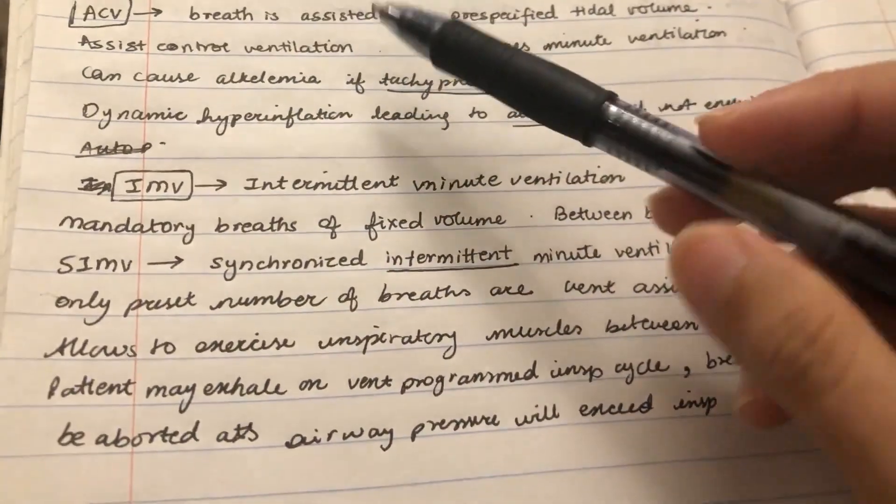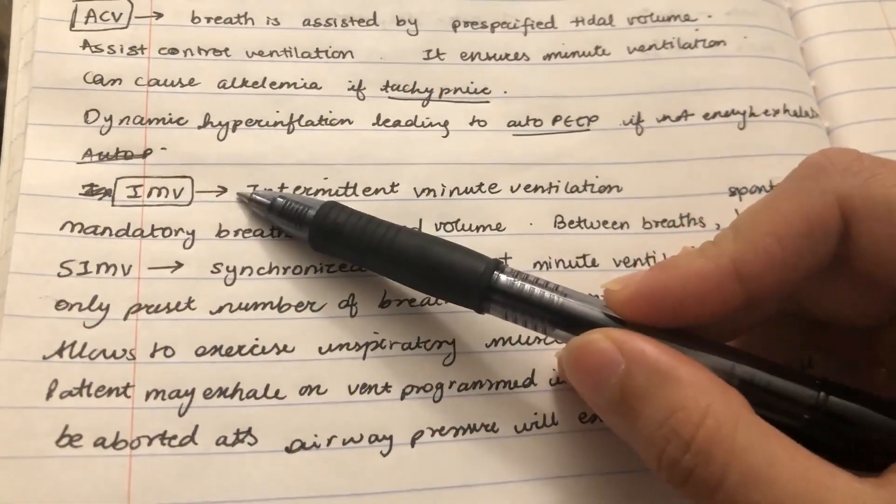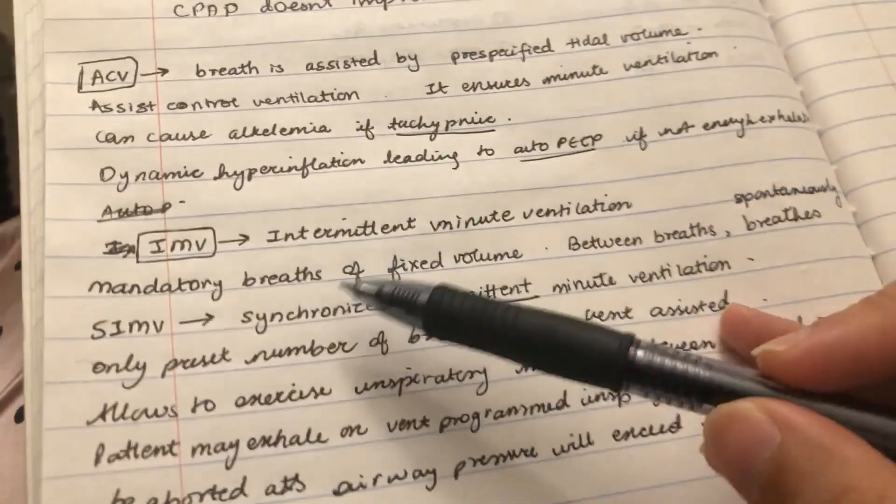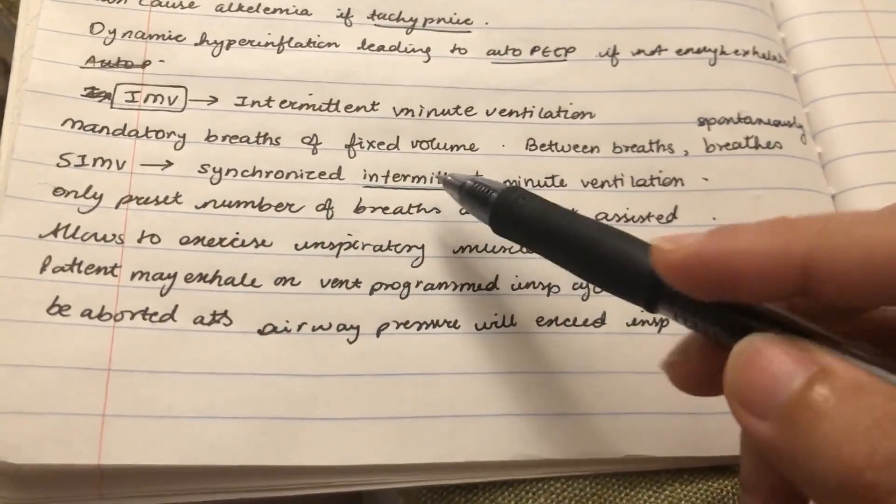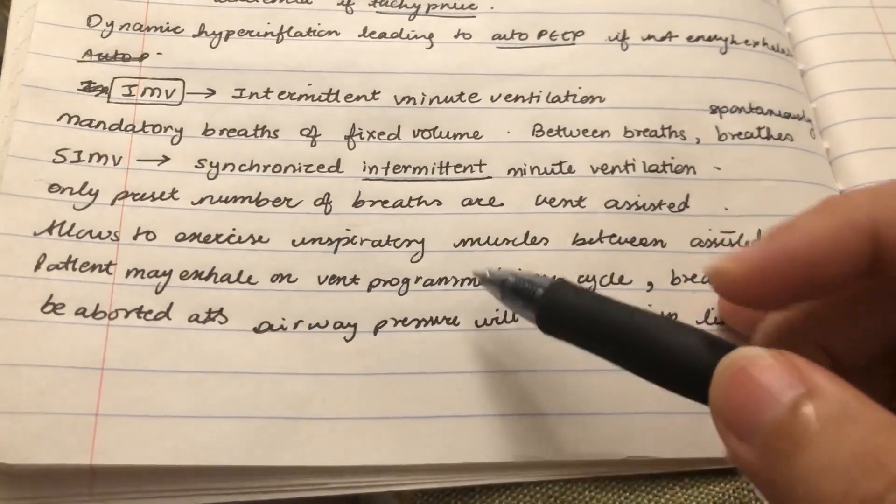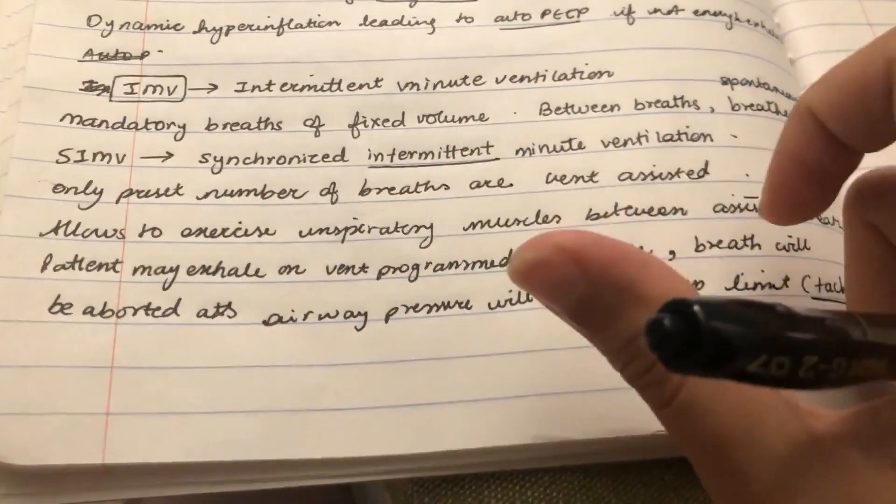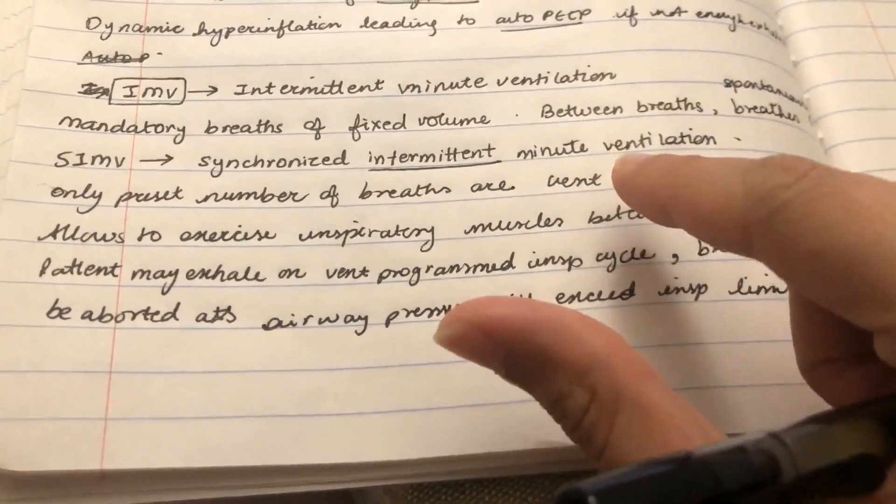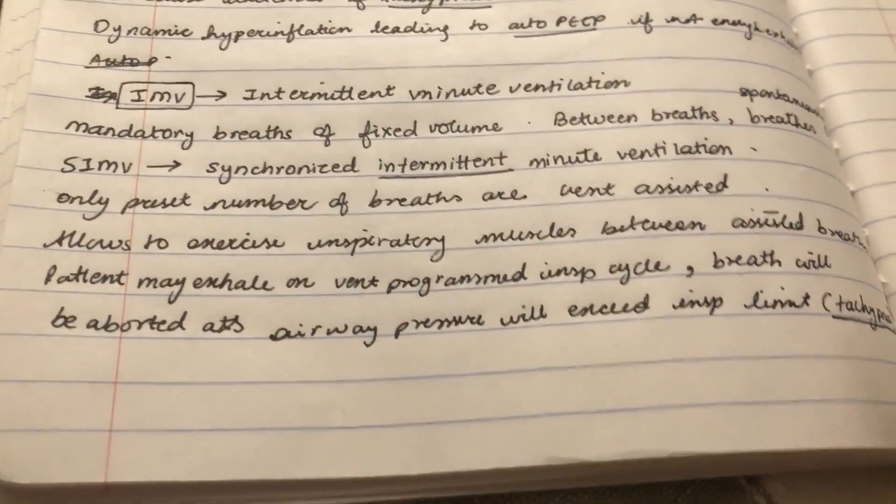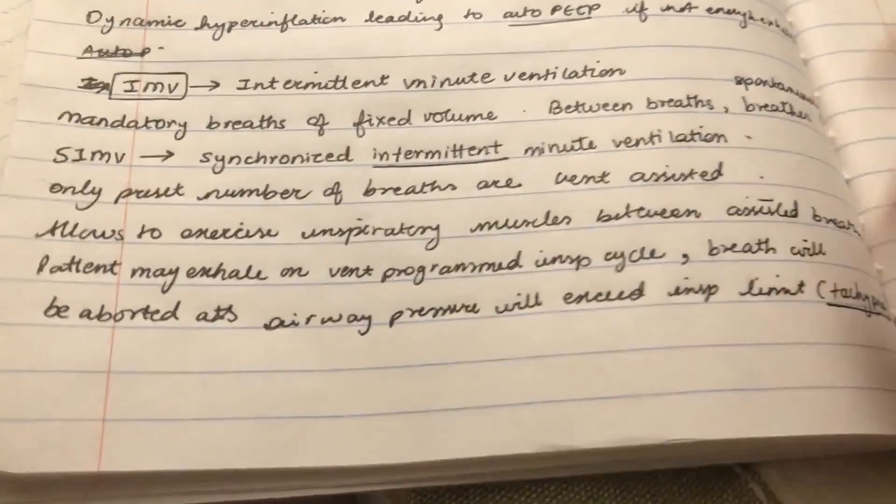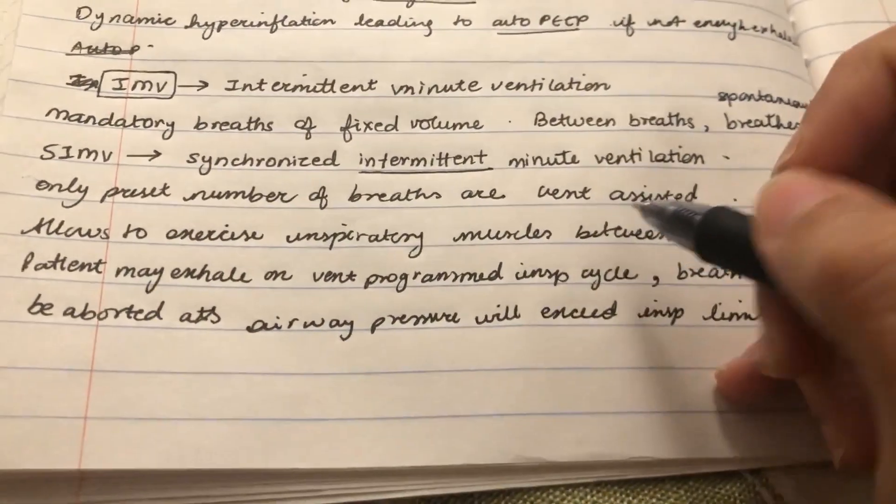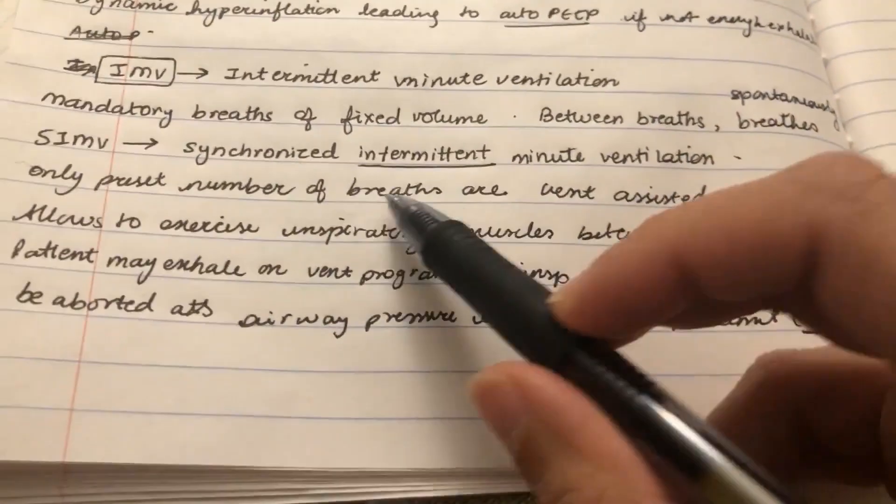This will be assist control. Intermittent minute ventilation - there are breaths between the mandatory breaths. The mandatory breaths are a fixed volume, and the patient can take spontaneous breaths in between.